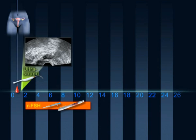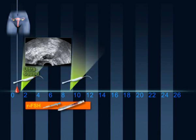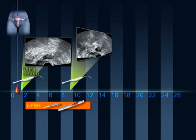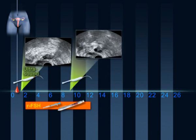At the end of about five to seven days of stimulation, another scan is performed to determine the number and size of the follicles as well as the quality of the endometrium. On this day of stimulation, the follicle should reach a size of 13 to 15 mm.